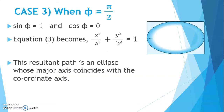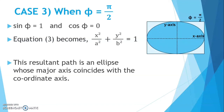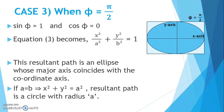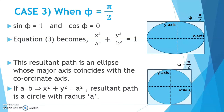If A equals to B, that is, if the amplitudes of x and y are equal, then we get x² + y² = A². The resultant path is a circle with radius A.